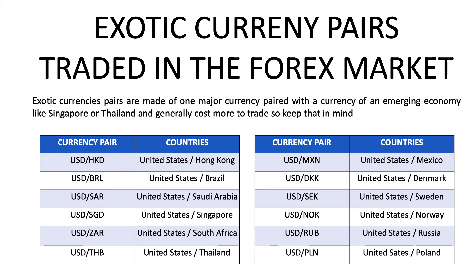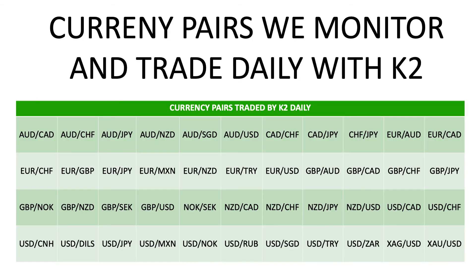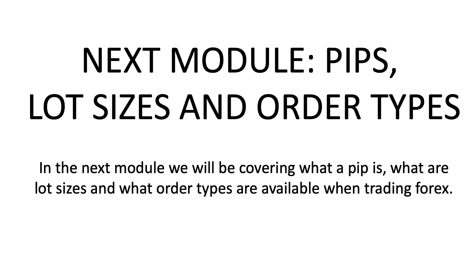Here's a list of the currency pairs that we monitor and trade daily with K2. These are usually chosen due to their low spreads and high volatility. Next up, we're going to be going over pips, lot sizes, and order types.